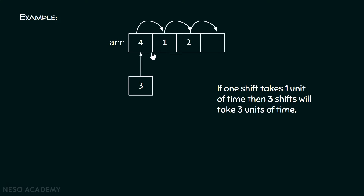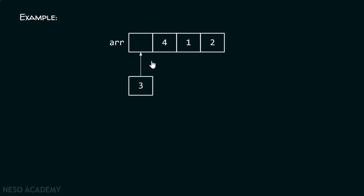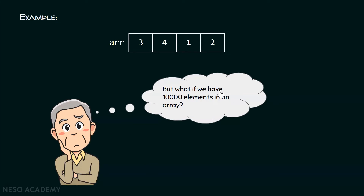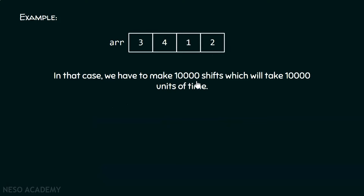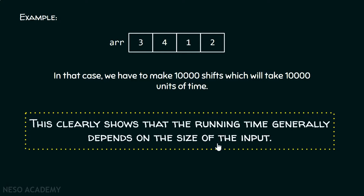With the size equal to three, the time will also be three units. After shifting, this will become empty and then I can add the element at the beginning of the list. But what if we have ten thousand elements in an array? Shifting is costly. We have to make ten thousand shifts which will take ten thousand units of time, since we assumed one shift takes one unit of time. So it is clear that running time generally depends on the size of the input.